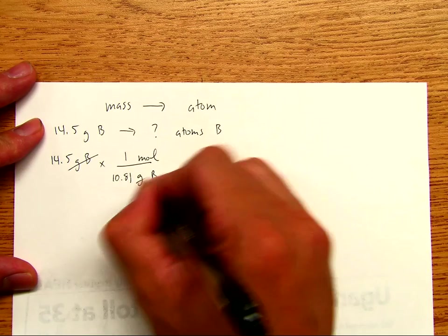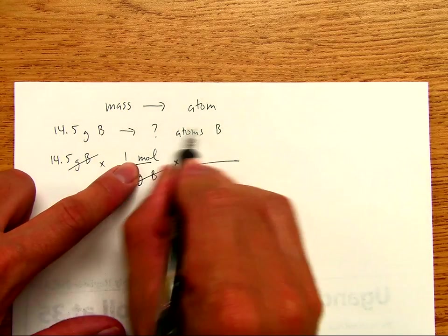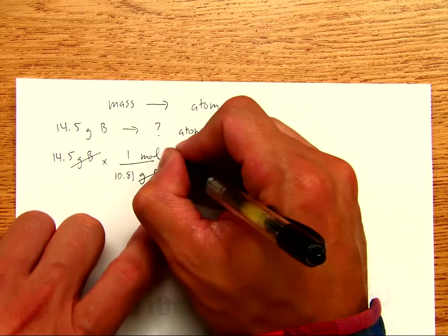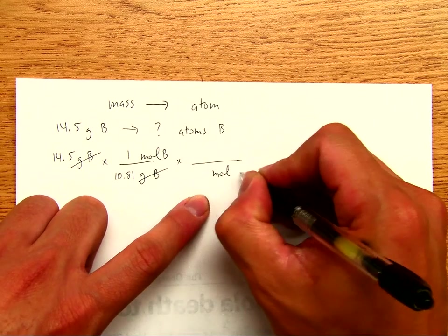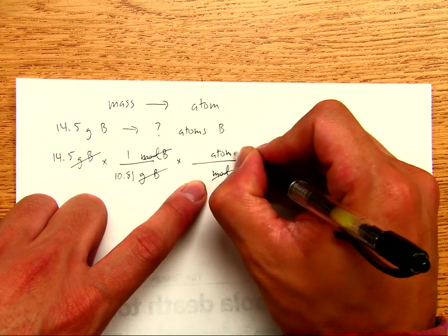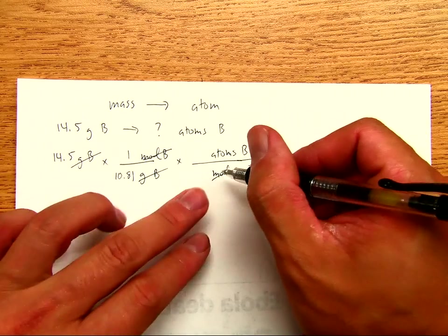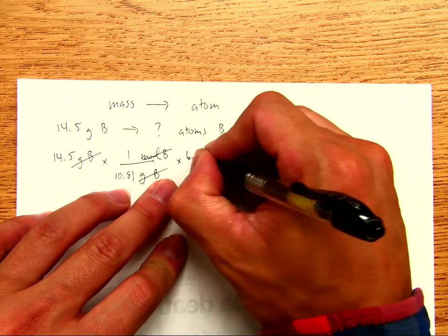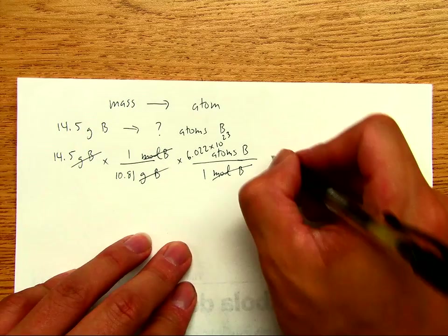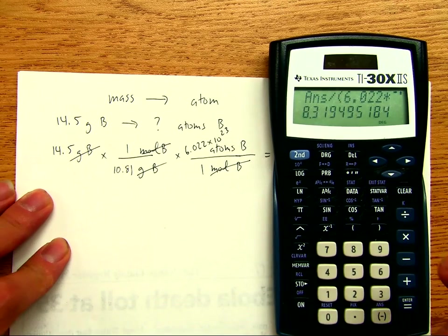Now the grams cancel. Since we want our answer in atoms, not moles, we take it one step further and write mole on the bottom so that the moles cancel, and we'll end up with atoms of boron. The relationship between mole and atoms is that for every one mole we have 6.022 × 10²³ atoms of boron.